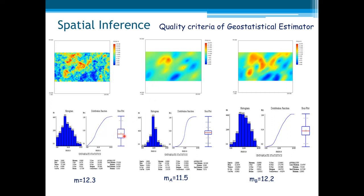Let us have a look at the statistics, in particular the mean. This is the mean of the real values — the real mean — and this is the mean of model A and the mean of model B. Here comes the first criterion: we would like our estimator, no matter what it is, to have the same mean as the reality.